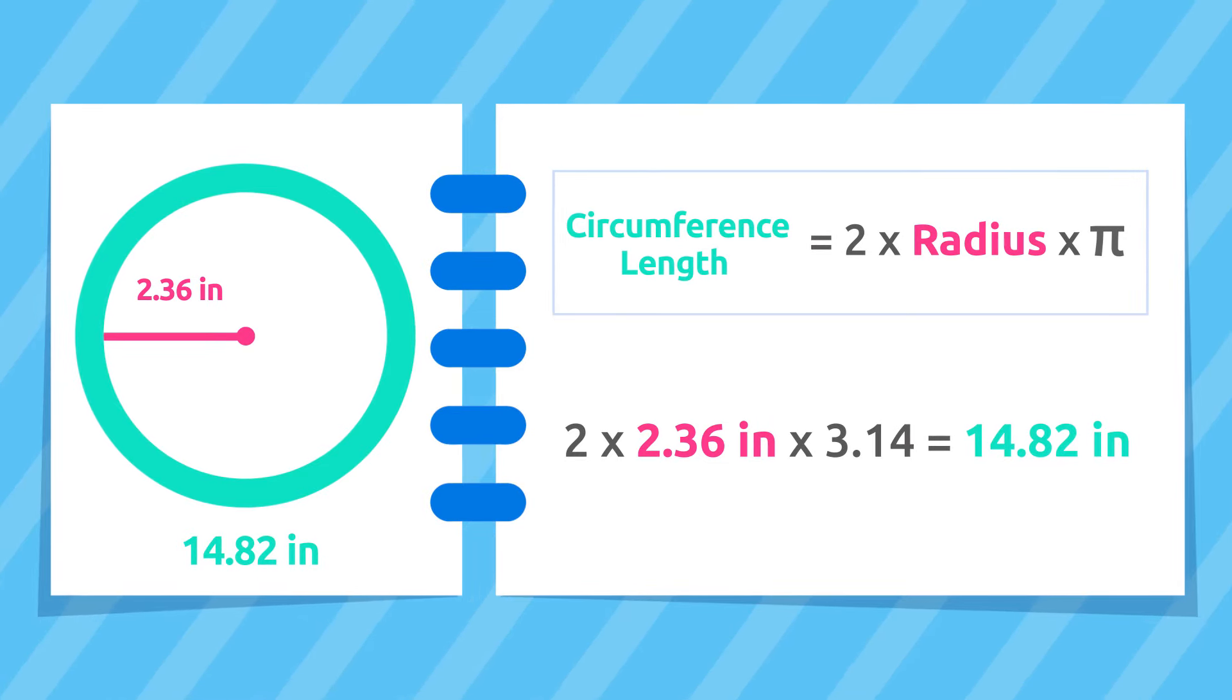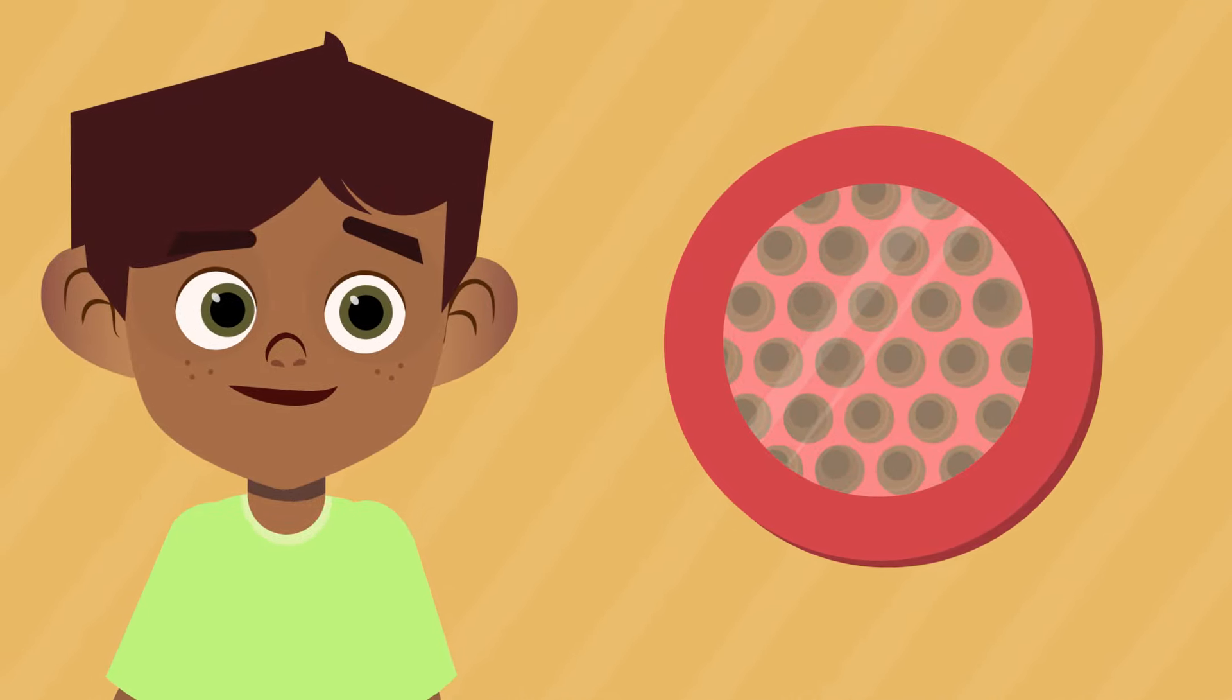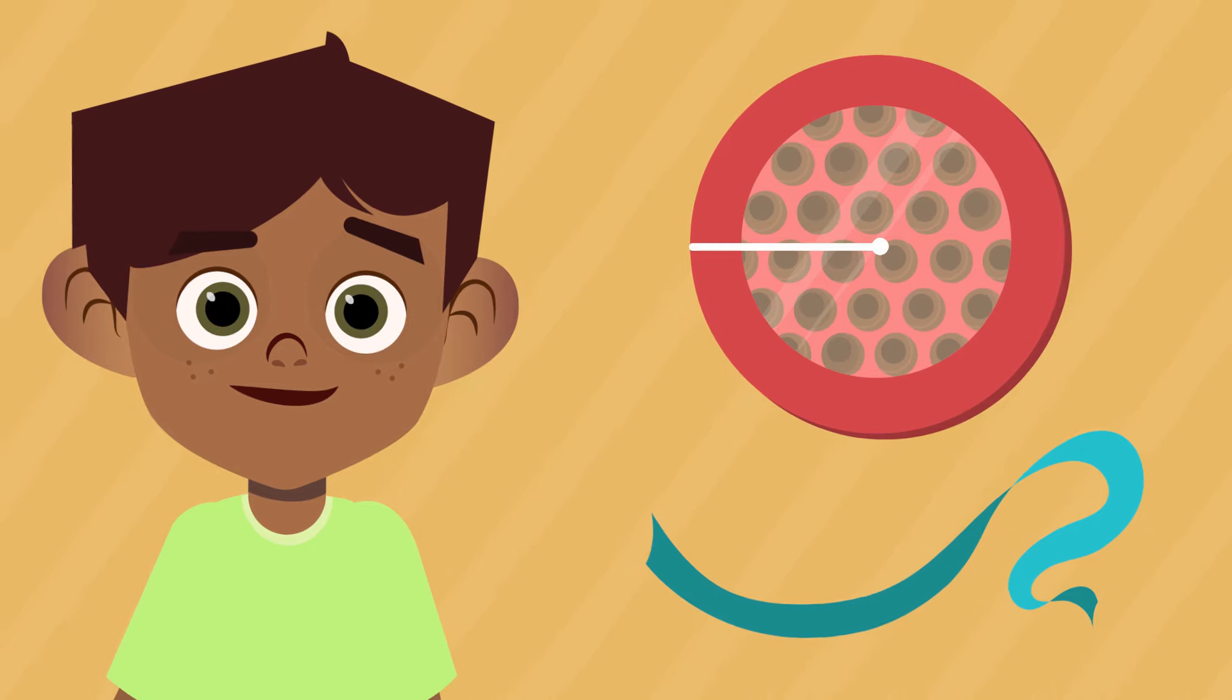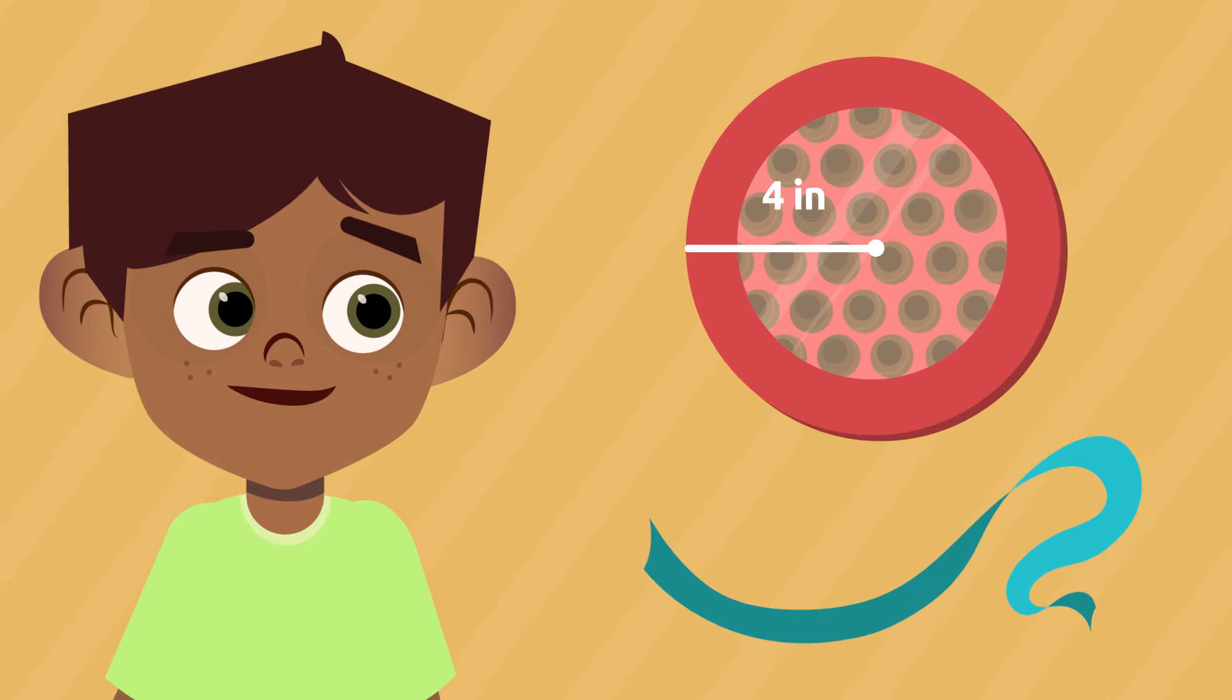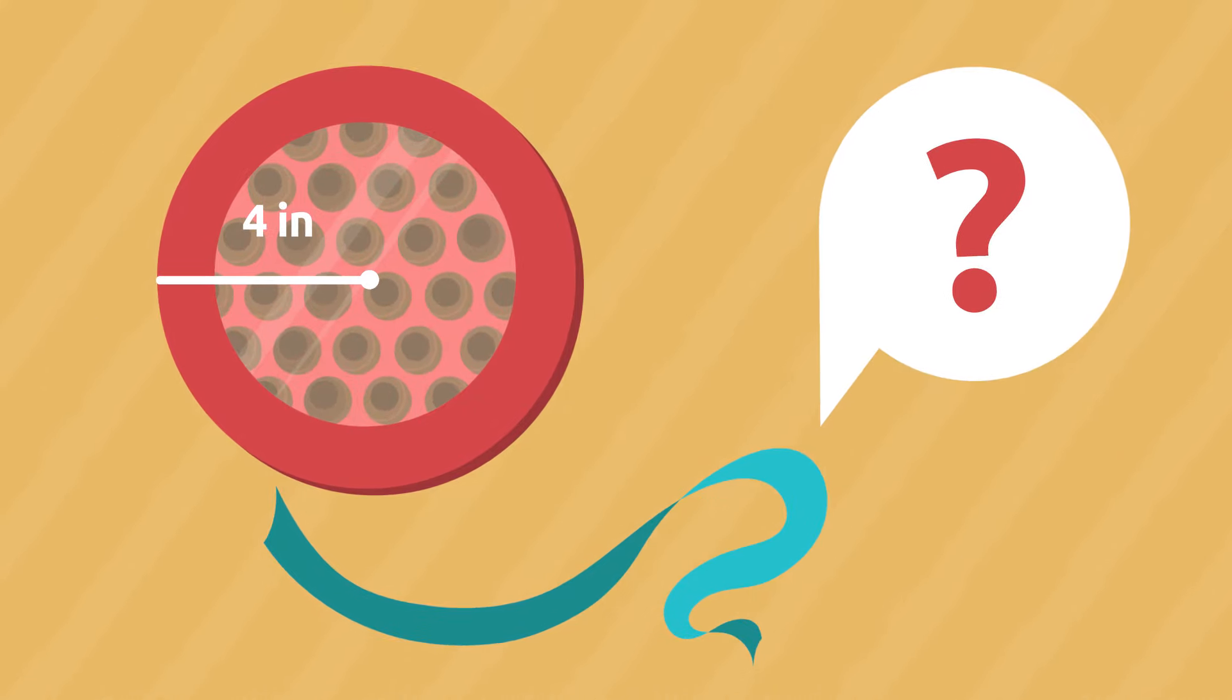Let's look at some real-life situations. Mark wants to decorate this box of chocolates using some wrapping string. The radius of the circumference of the box measures 4 inches. How many inches of wrapping string does he need to buy?